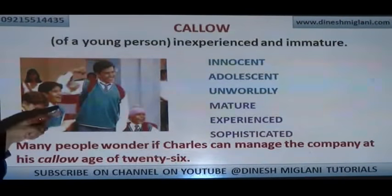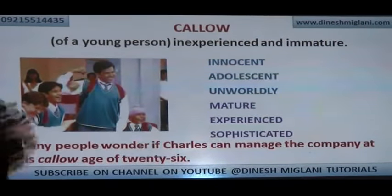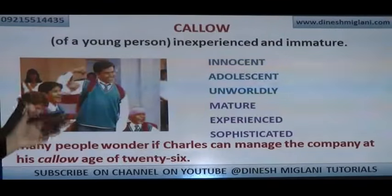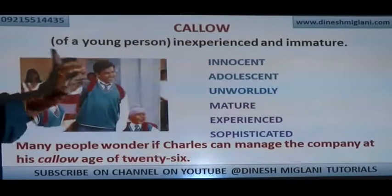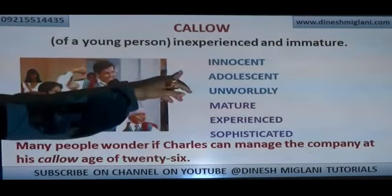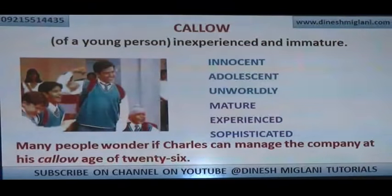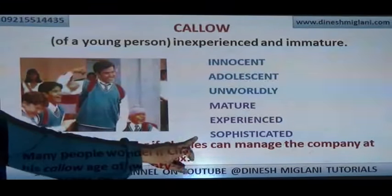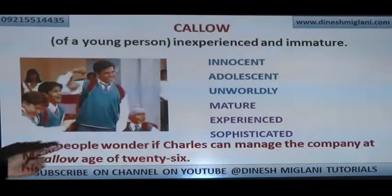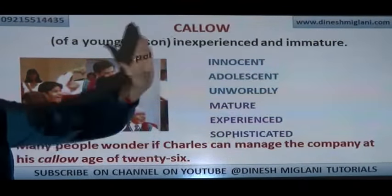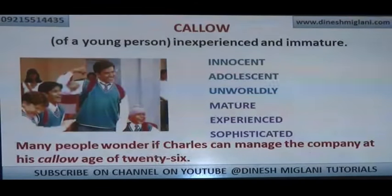Callow. A good example here — if you have seen the Hrithik Roshan movie, he is big enough but immature, and such action is immature. Callow means a young person who is inexperienced or immature. Such people can be considered innocent, adolescent, and unworldly. Opposite: mature, experienced, sophisticated. Example: 'Many people wonder if Charles can manage the company at his callow age of 26.'